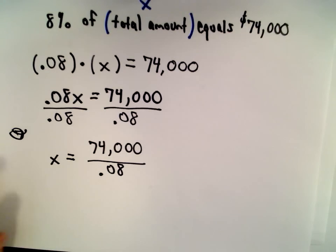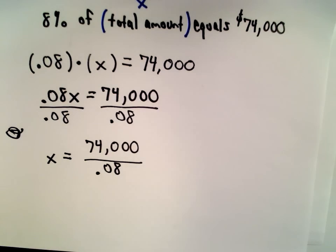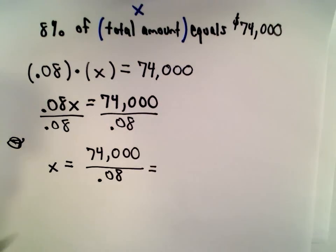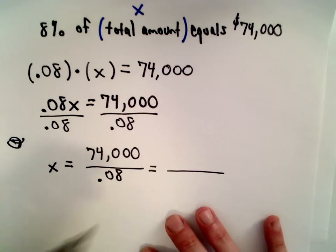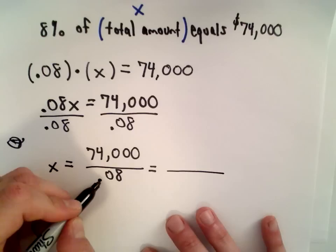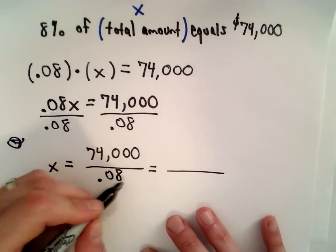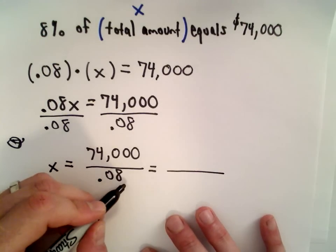And this is where maybe it's a little tedious. So I'm going to do it the long way, and then I'm going to maybe show a way that would be a little bit quicker. If you have a calculator, obviously, you could do $74,000 divided by .08 and boom, you're done.